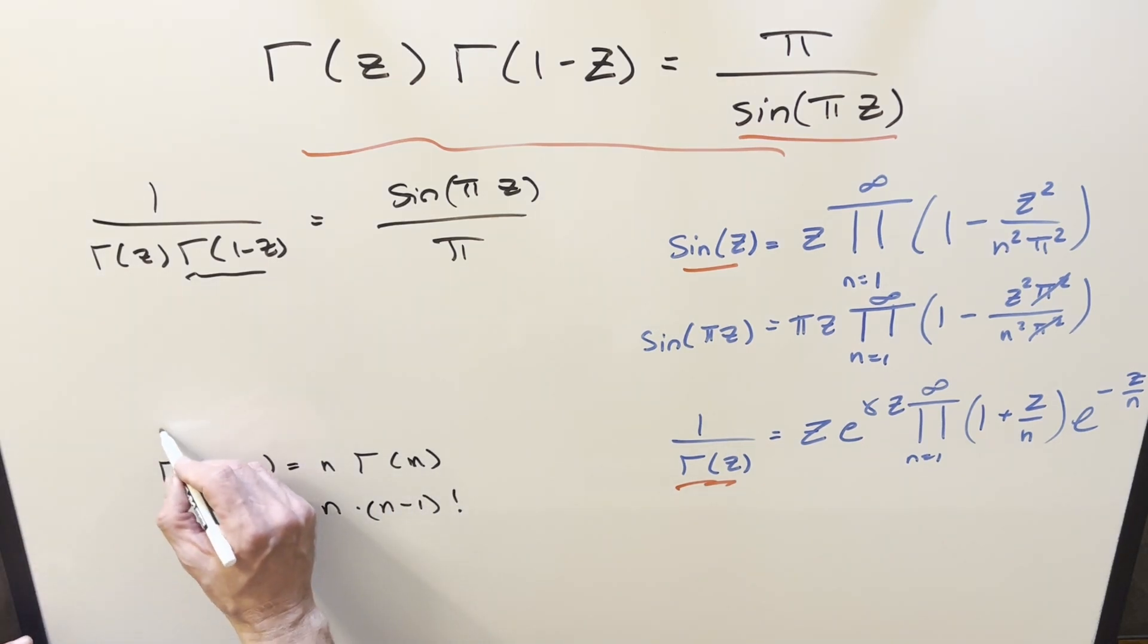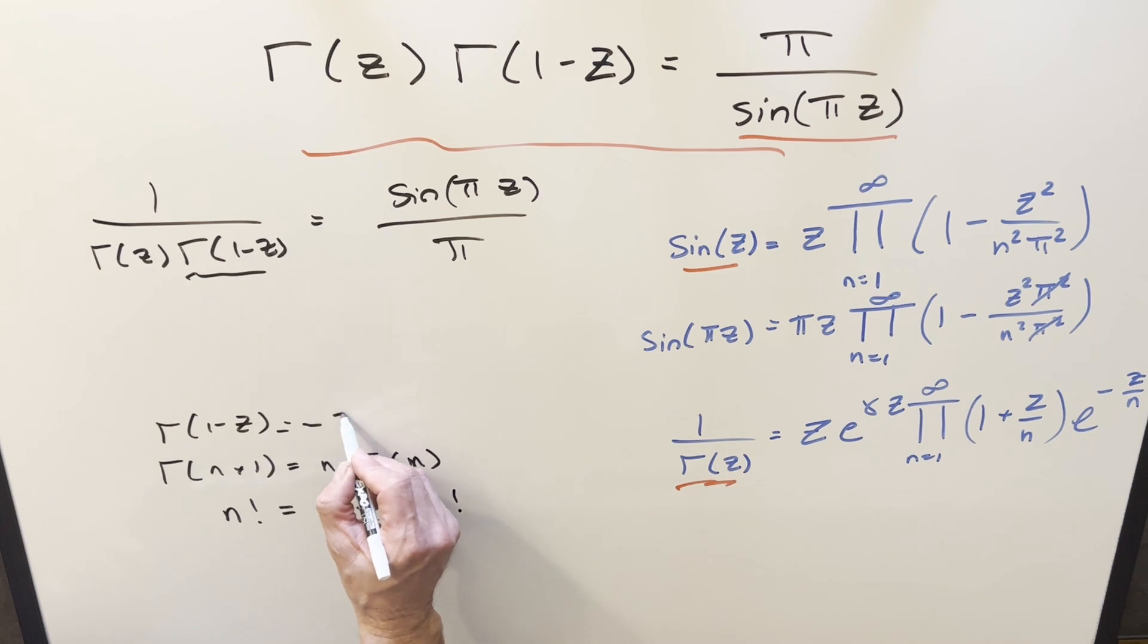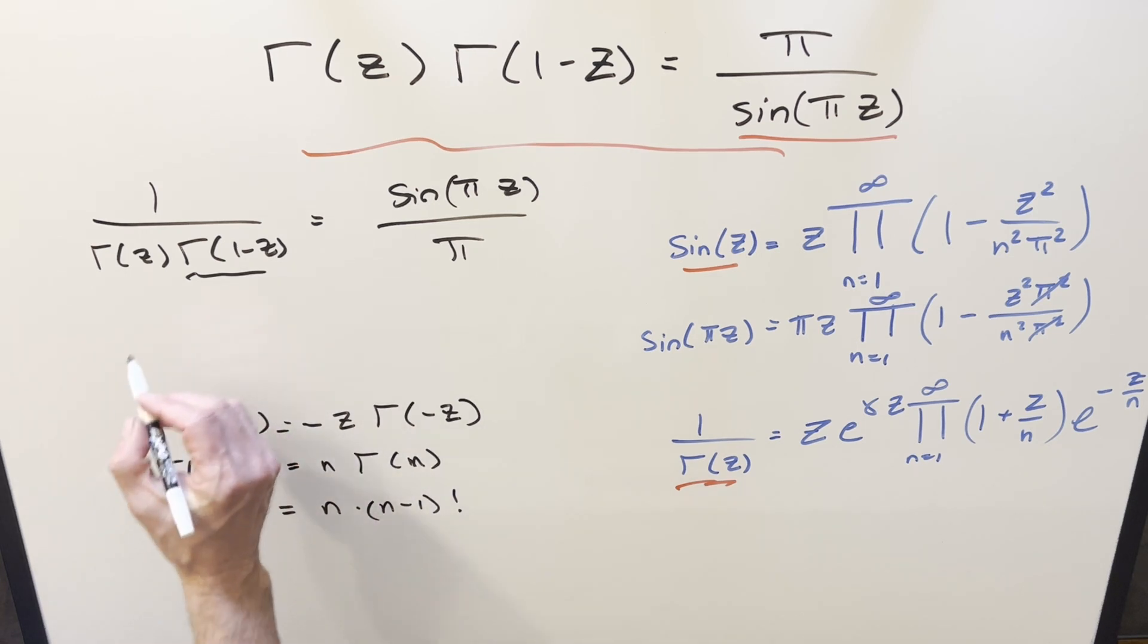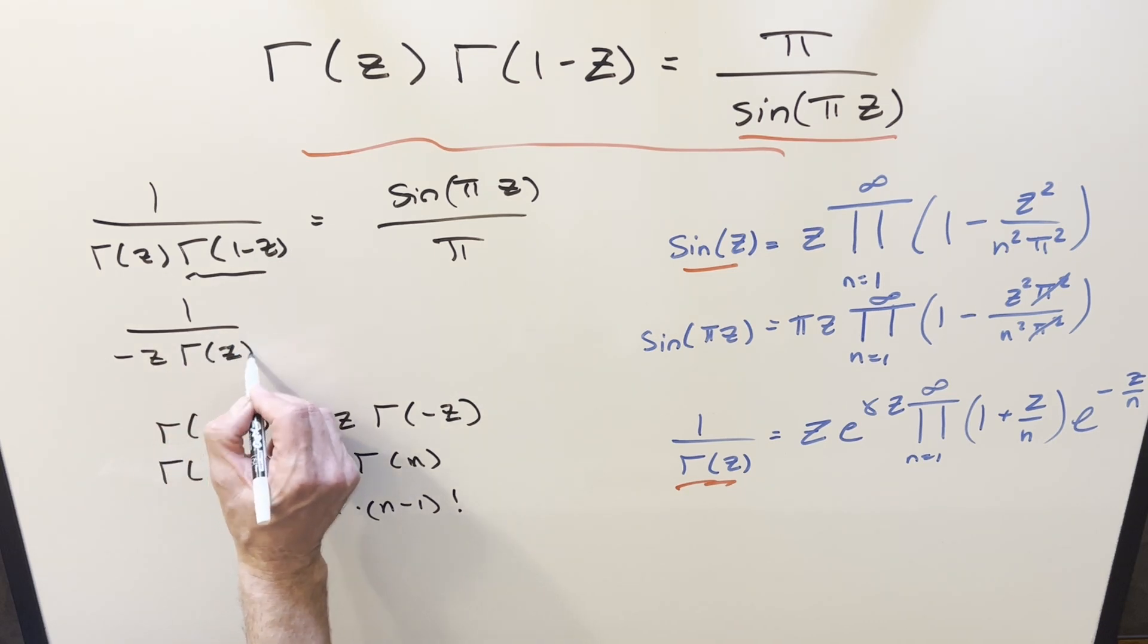So if I use this on gamma 1 minus z, just following the formula, subtract 1 to get here, like the input's minus z. What we get here is going to be minus z times gamma minus z. So I'll take this thing and plug it in for gamma 1 minus z. And what we have is, I'll just kind of reorder it, bring the minus z over here. We have minus z gamma z times this gamma of minus z.